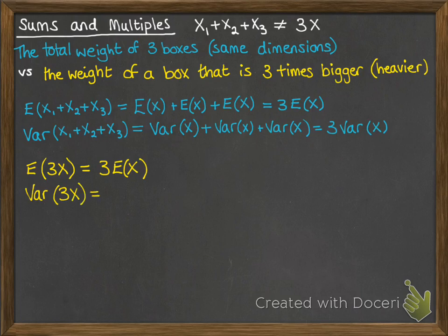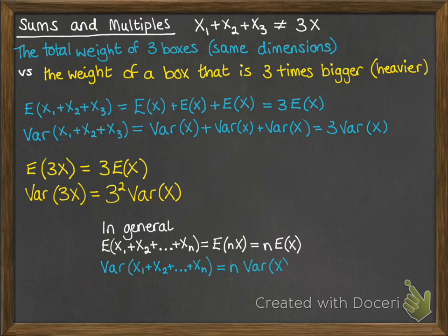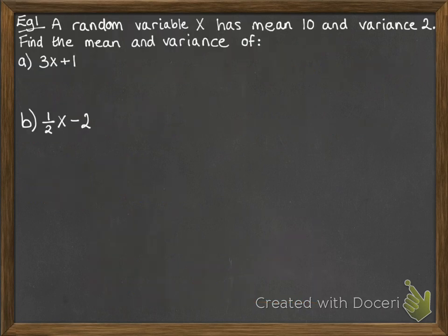If you make a box that is three times bigger, you do three times x, and that gives 3 squared times the variance of x. So the box that is three times bigger actually has more room for variance — it will vary by more. We can generalise these results: for sums you get n times the expectation or variance of the original distribution, but when multiplying up there is a difference, giving n squared times the variance in the variance equation.